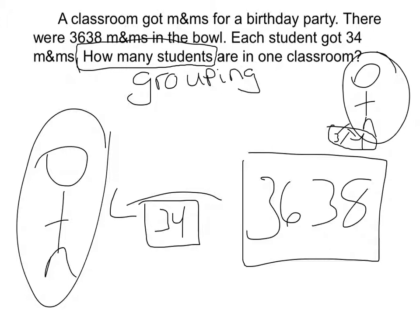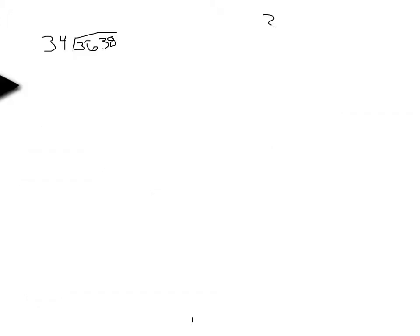So it's a lot like how many groups but instead it says how many students. To solve this equation I did 34 times 100 which equals 3,400. Then I tried 34 times 110 which equals 3,740. And that was over 3,638. So I did 34 times 105 which equals 3,570.